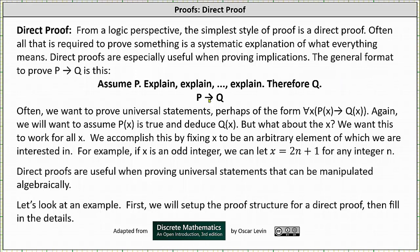Direct proofs are in the form of if P then Q. Often we want to prove universal statements, perhaps of the form for every x, if P(x) then Q(x). Again, we want to assume P(x) is true and deduce Q(x).